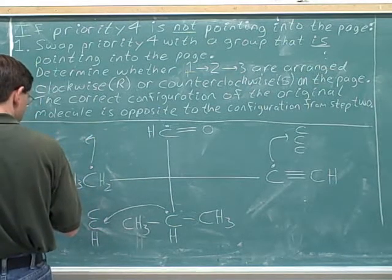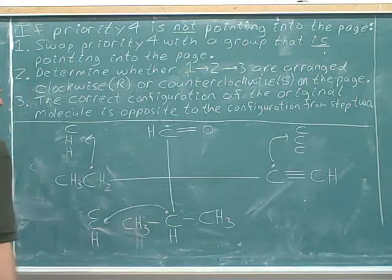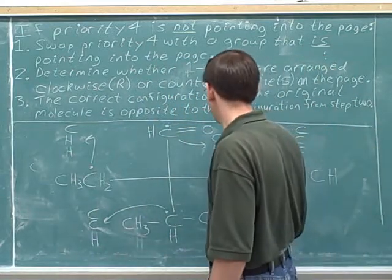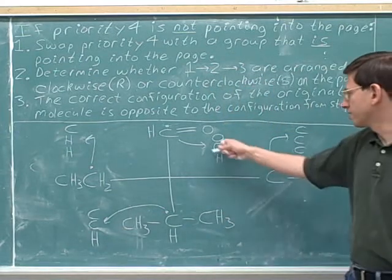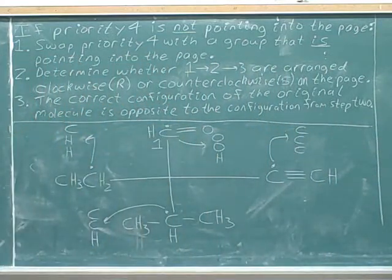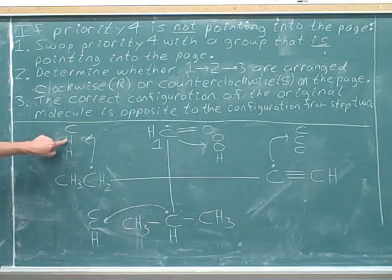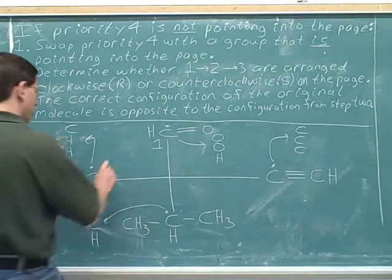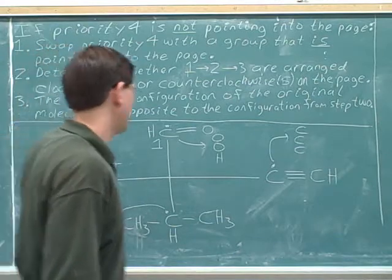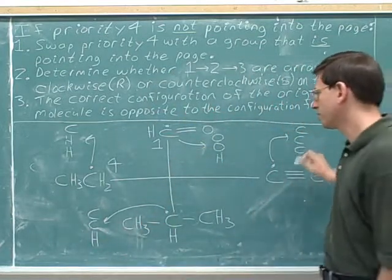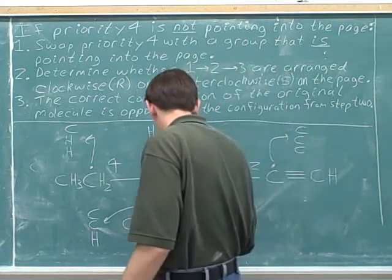On the left, the carbon is attached to a carbon and two hydrogens. On top, this carbon is double bonded to an oxygen, which we treat as two oxygens and a hydrogen. The first atom in the top list — oxygen — is better than the first atoms in all the other lists, so that's number one priority. The second atom in the left list is inferior to the second atom in the bottom list, so the left-hand group gets number four priority. The third atom in the bottom list — carbon — is superior to the third atom in the right list — hydrogen — so the right-hand group gets number two and the bottom group gets number three.